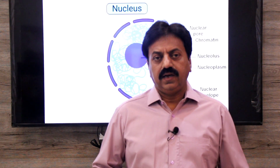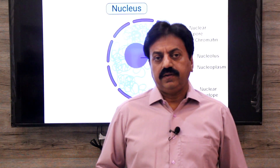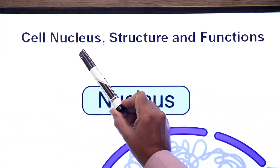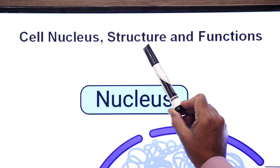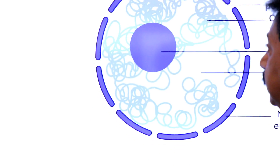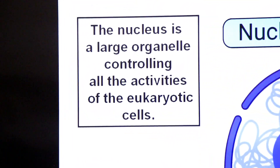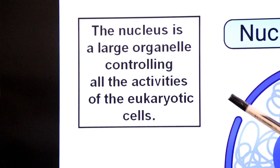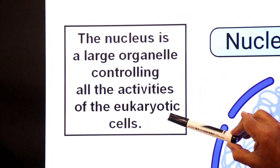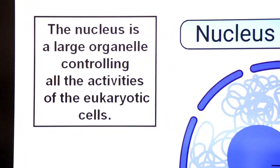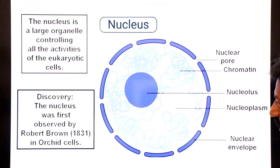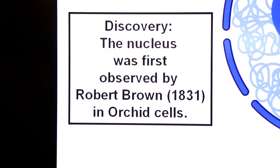Hello dear students, today we will talk about the cell nucleus — the structure of cell nucleus and functions of cell nucleus. The nucleus is a large organelle controlling all the activities of eukaryotic cells, as it contains DNA and DNA gives direction to control various activities of the cells.